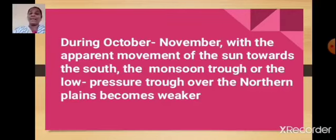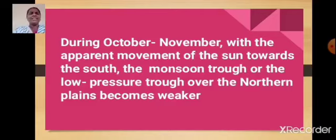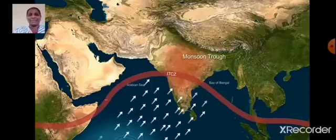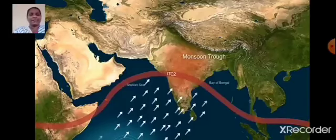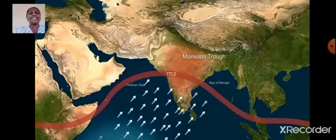During October-November, with the apparent movement of the sun towards the south, the monsoon trough or the low-pressure trough over the northern plains becomes weaker. Here you can see the monsoon trough in the northern plain. Monsoon trough is the name given to the region in the ITCZ which has low pressure.